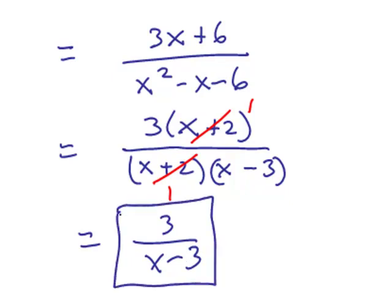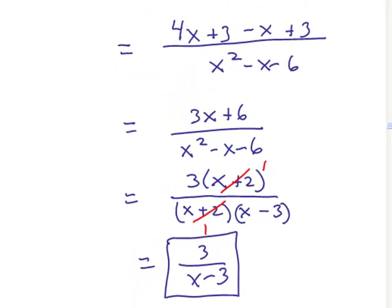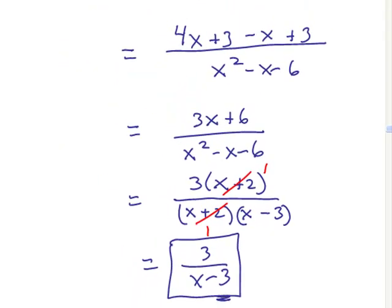I know there might be some temptation to divide out the 3s, but we can actually divide out common factors, not common terms. And in the denominator here, that 3 is a term, not a factor.